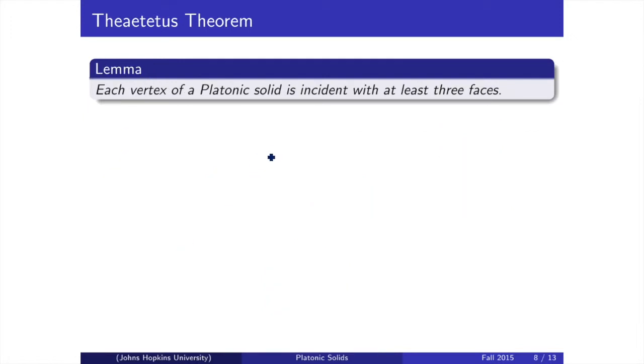For the first lemma, we want to show that a vertex is a meeting of at least three faces. A vertex is defined as the meeting of three or more edges.